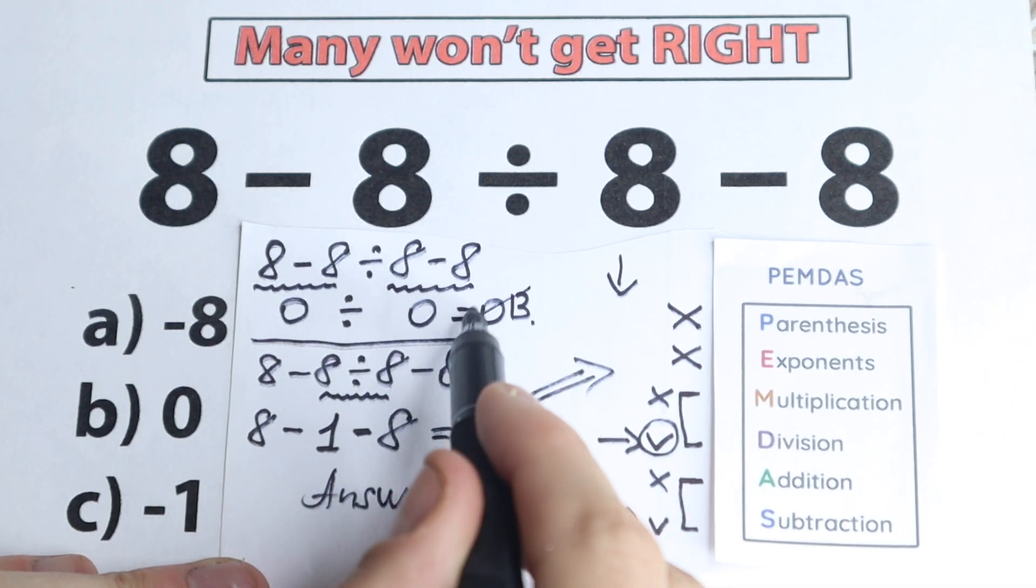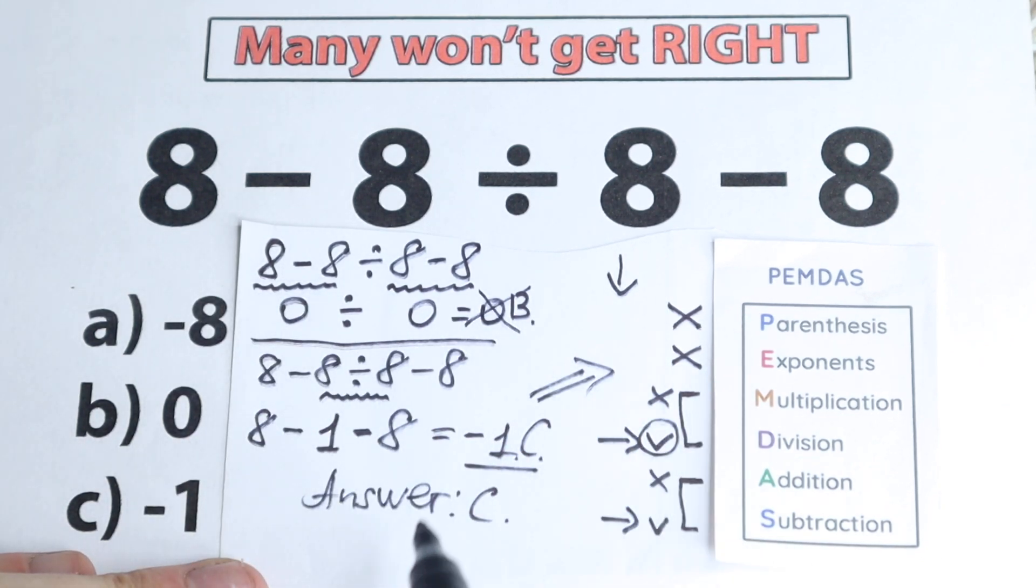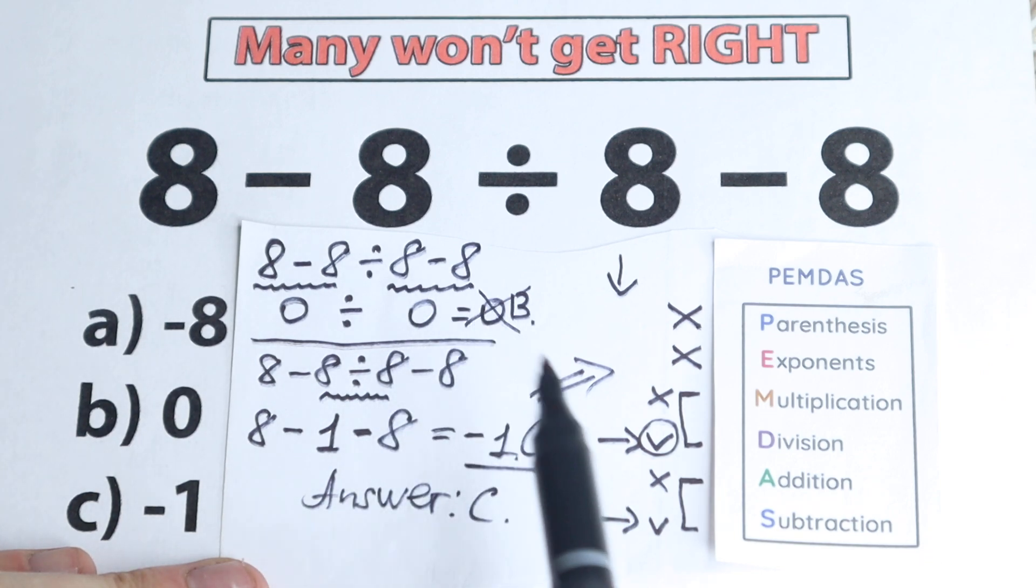this is absolutely wrong order of operation. So we should forget about this zero, we can't solve it like that. Zero divided by zero is undefined, we don't know about this answer. But this is the most common mistake, and many solve this question like that.